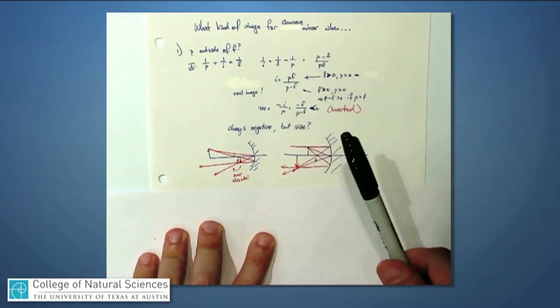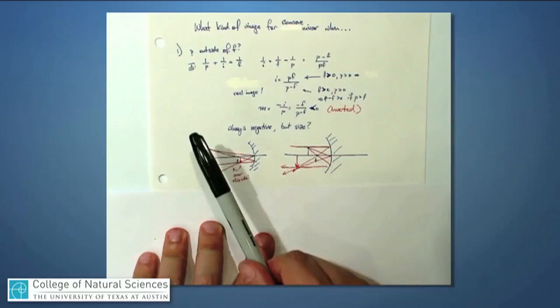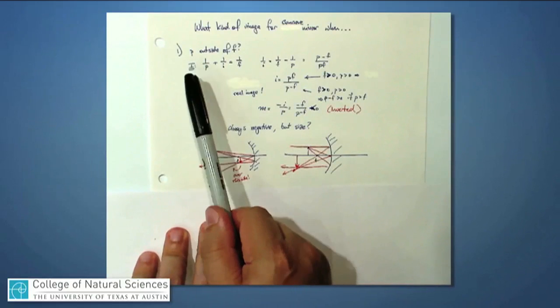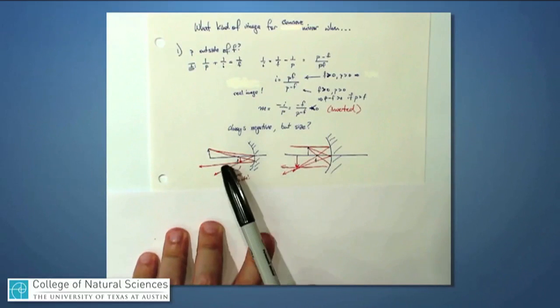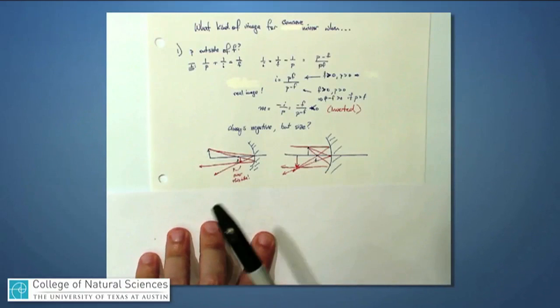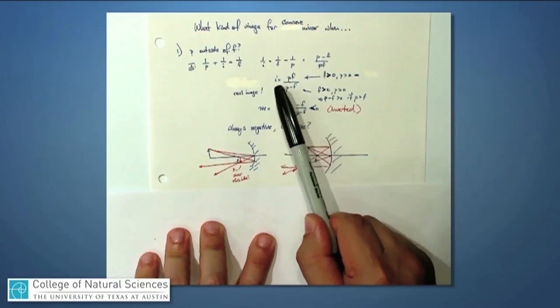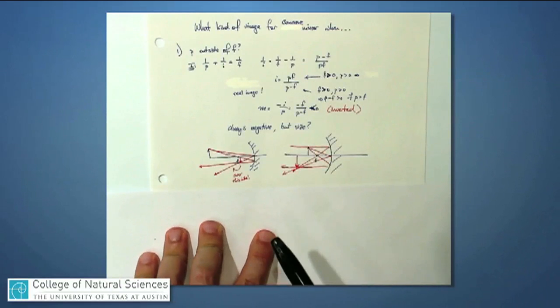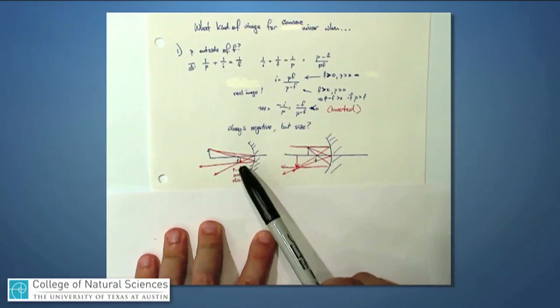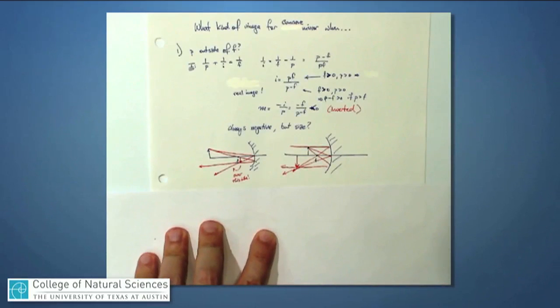Now we can take several different cases about where the object is located. If we take the first case where p is outside of f, in other words the object is further away than the focal length, then the denominator is positive as well, and i is positive. That means that I get a real image. I should expect the image location to be here on the left hand side of the mirror.